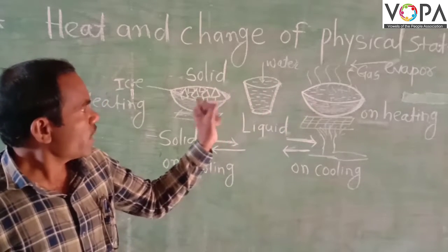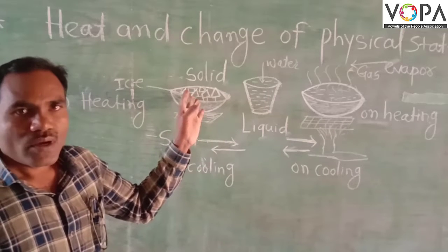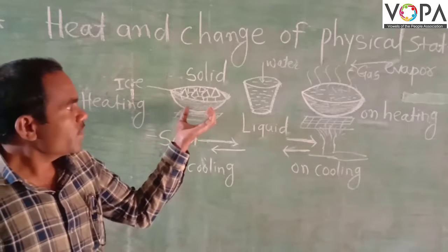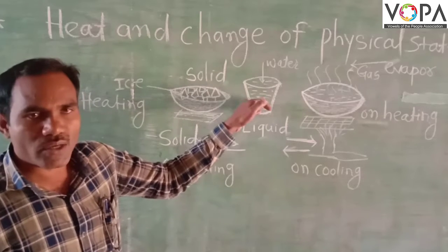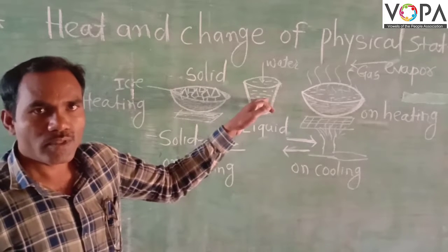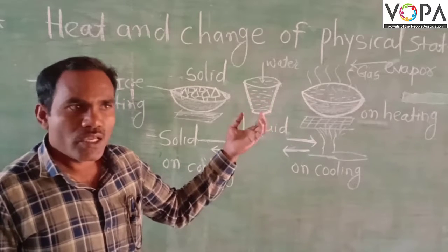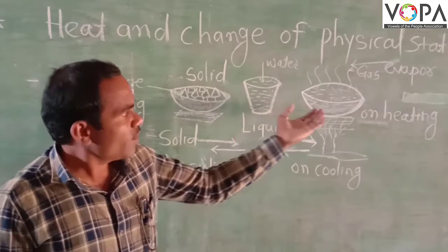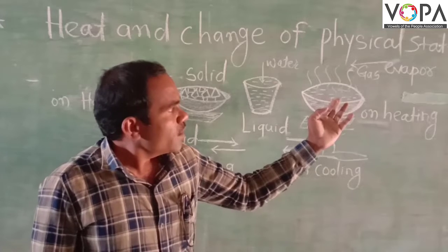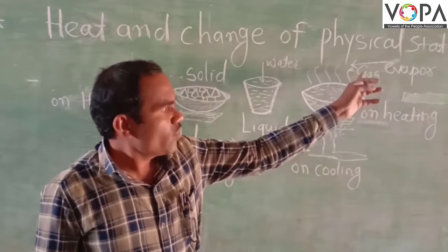Look at this. This is a piece of ice. When we heat it, it is converted into a liquid — water. And when we heat the water, the water is converted into a gas — water vapor.